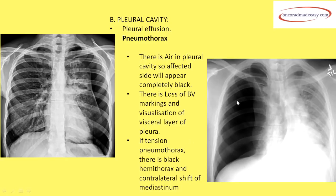Opposite to white-out lung is black-out lung — massive pneumothorax. In massive pneumothorax there is a shift of the mediastinum towards the opposite side, giving tension pneumothorax. If there is a shift of the mediastinum towards the contralateral side, that is tension pneumothorax. If there is no shift, it is simple pneumothorax.